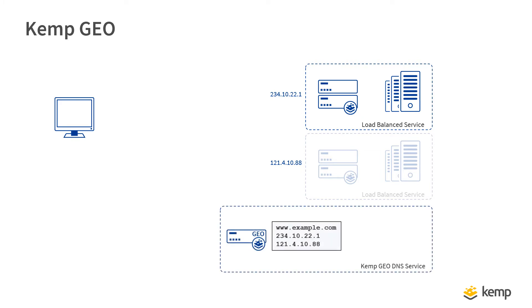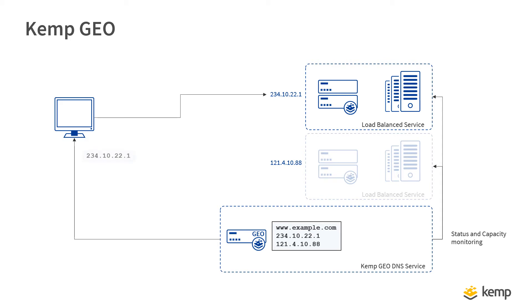This is where GSLB provided by KEMP's Geo comes into play. KEMP's Geo monitors the status and capacity of services and is able to detect if a service is completely unavailable or has reduced capacity. Where a service is unavailable, the KEMP's Geo DNS service will not return the IP address of unavailable services, so clients are only directed to a resource that can service their request.